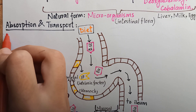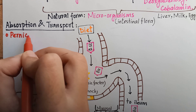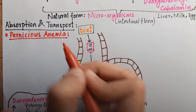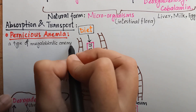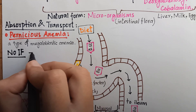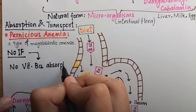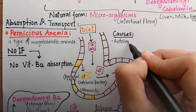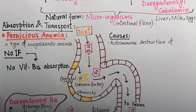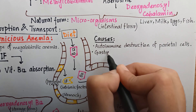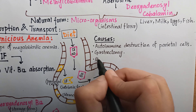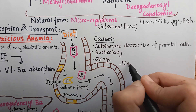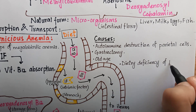The most important disease associated with B12 deficiency is pernicious anemia. Pernicious anemia is a type of megaloblastic anemia in which the body is not able to absorb vitamin B12 due to lack of intrinsic factor in the stomach. Causes include autoimmune destruction of gastric parietal cells that secrete intrinsic factor, partial or total gastrectomy leading to intrinsic factor deficiency, insufficient production of intrinsic factor usually seen in older people, and dietary deficiency of B12 usually in low socioeconomic groups.